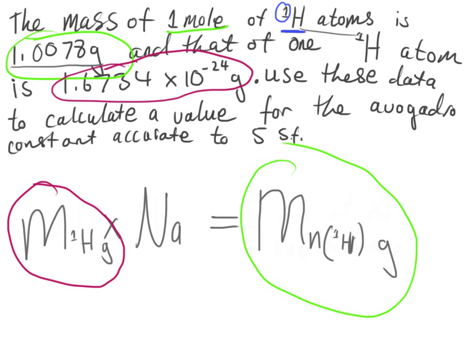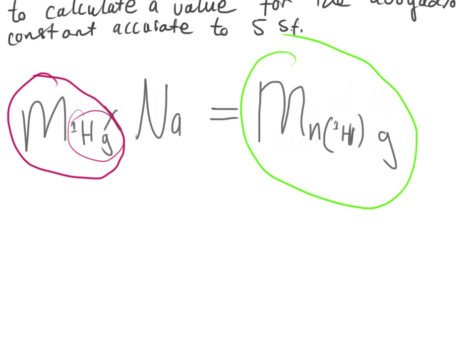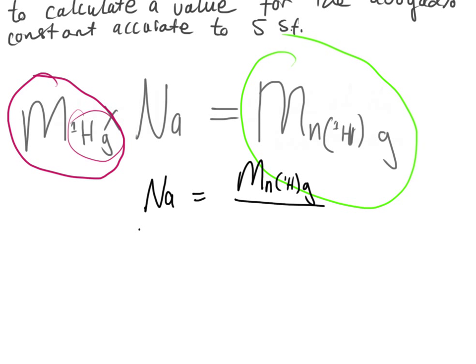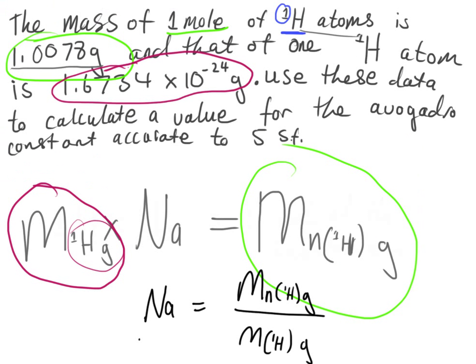What we can do now is rearrange this equation for Nₐ. We divide both sides by the mass of one atom of hydrogen. Rearranging, we get: the Avogadro constant equals the mass of one mole of the hydrogen isotope in grams divided by the mass of an individual atom in grams. We've been given both of these values, so all we need to do is substitute them into this formula.